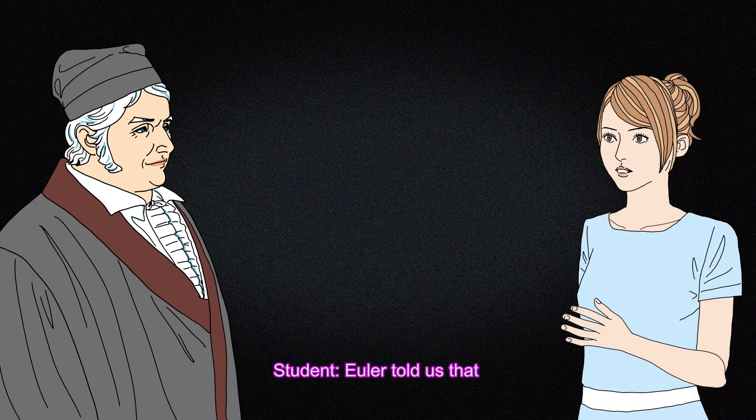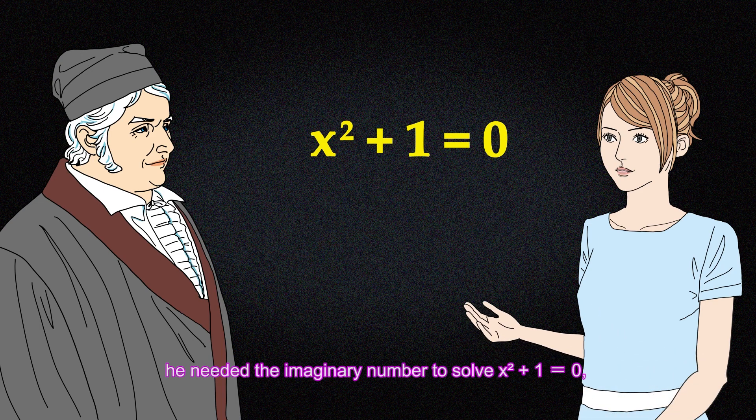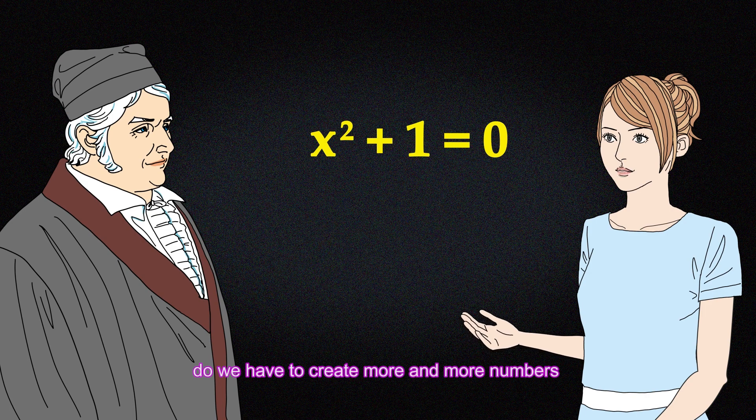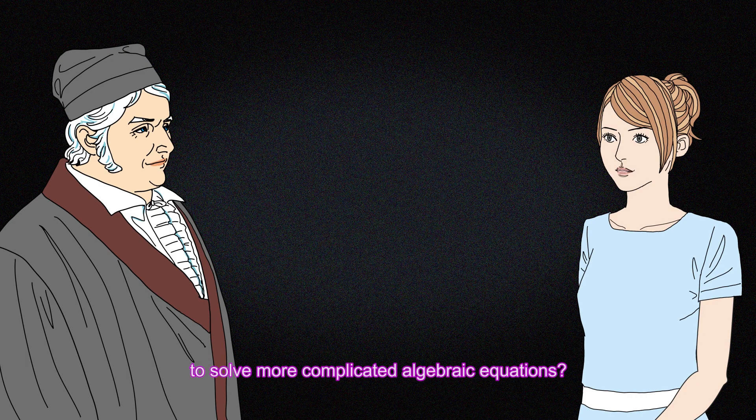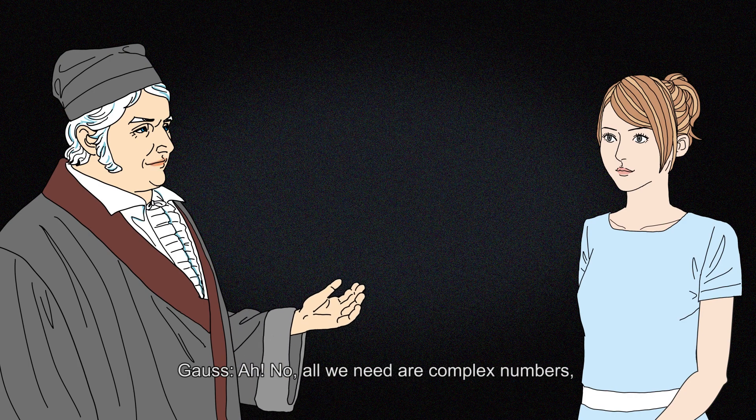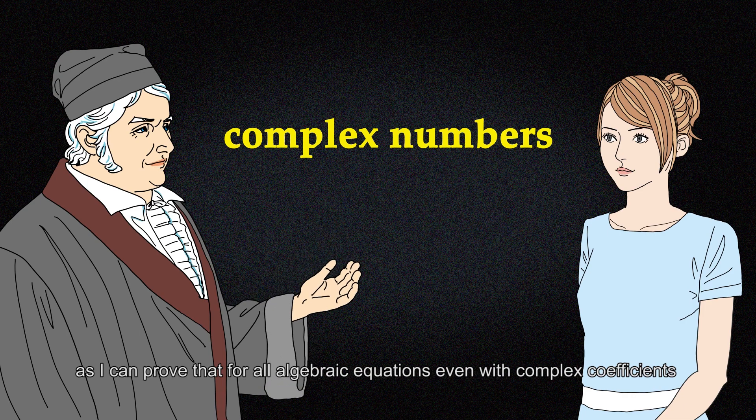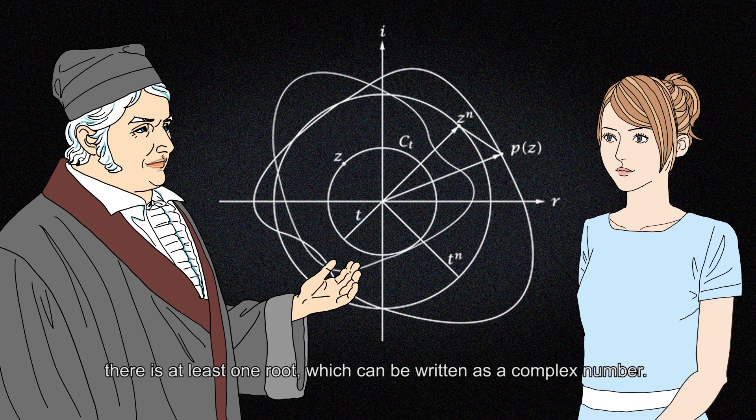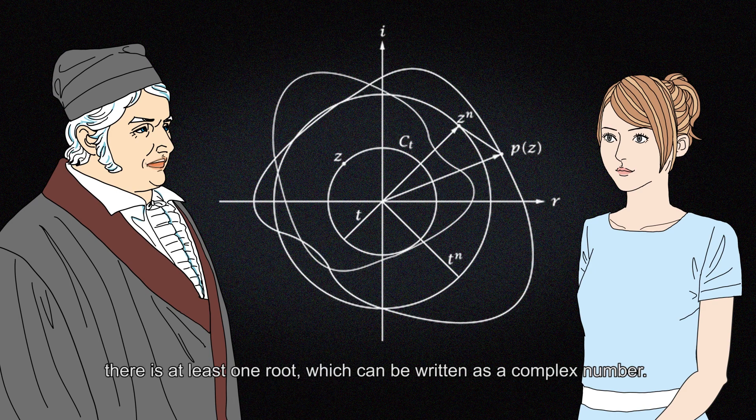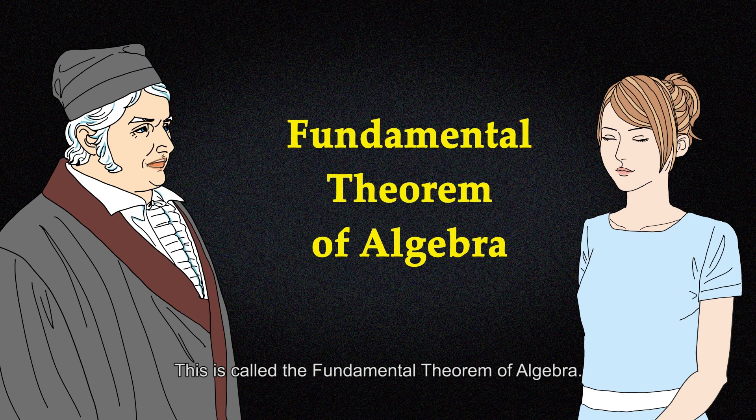Euler told us that he needed the imaginary number to solve x squared plus 1 equals 0. Do we have to create more and more numbers to solve more complicated algebraic equations? No, all we need are complex numbers, as I can prove that for all algebraic equations even with complex coefficients there is at least one root, which can be written as a complex number. This is called the fundamental theorem of algebra.